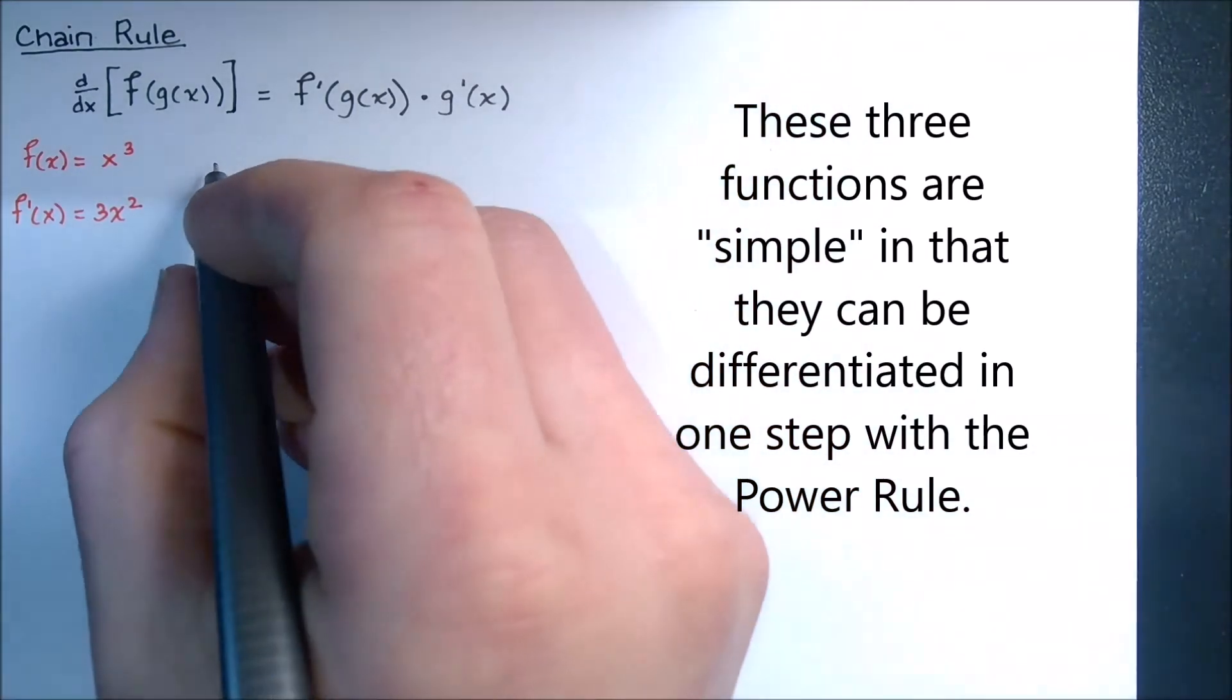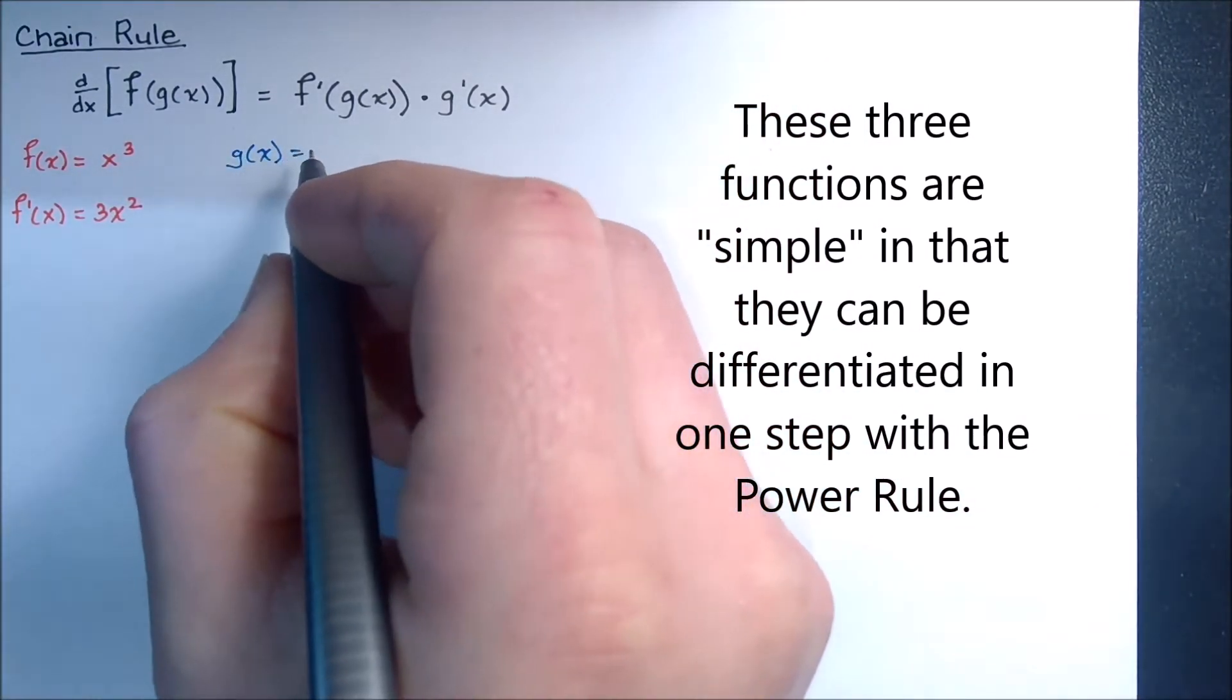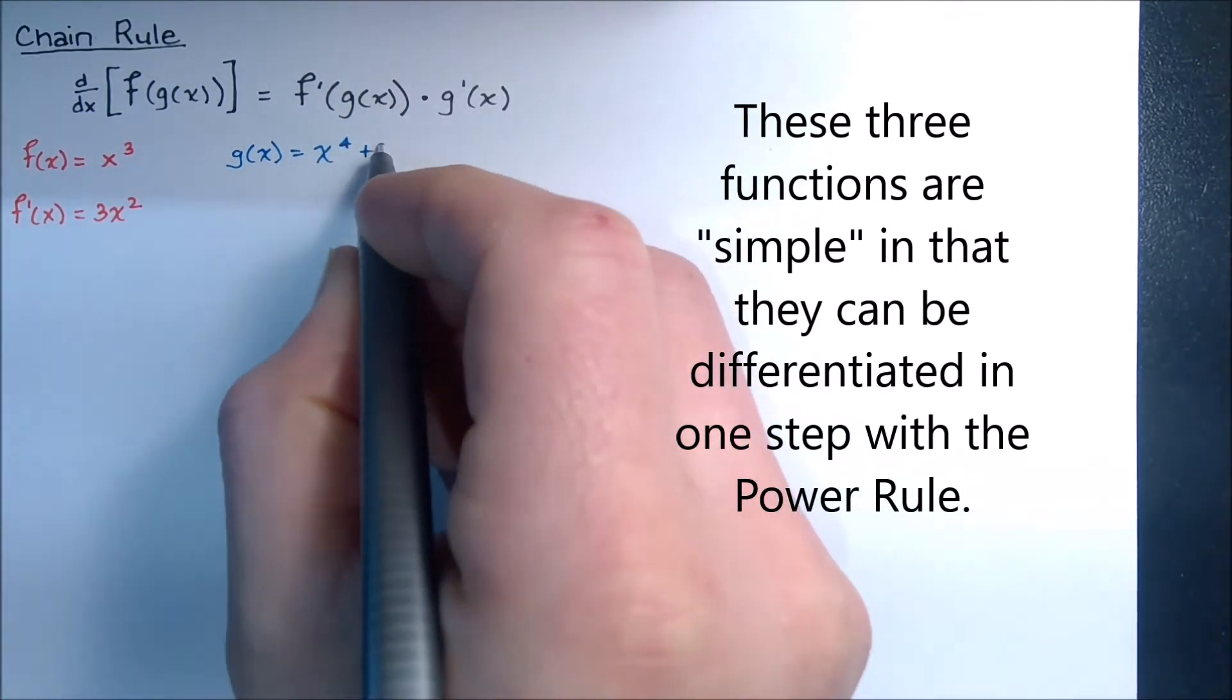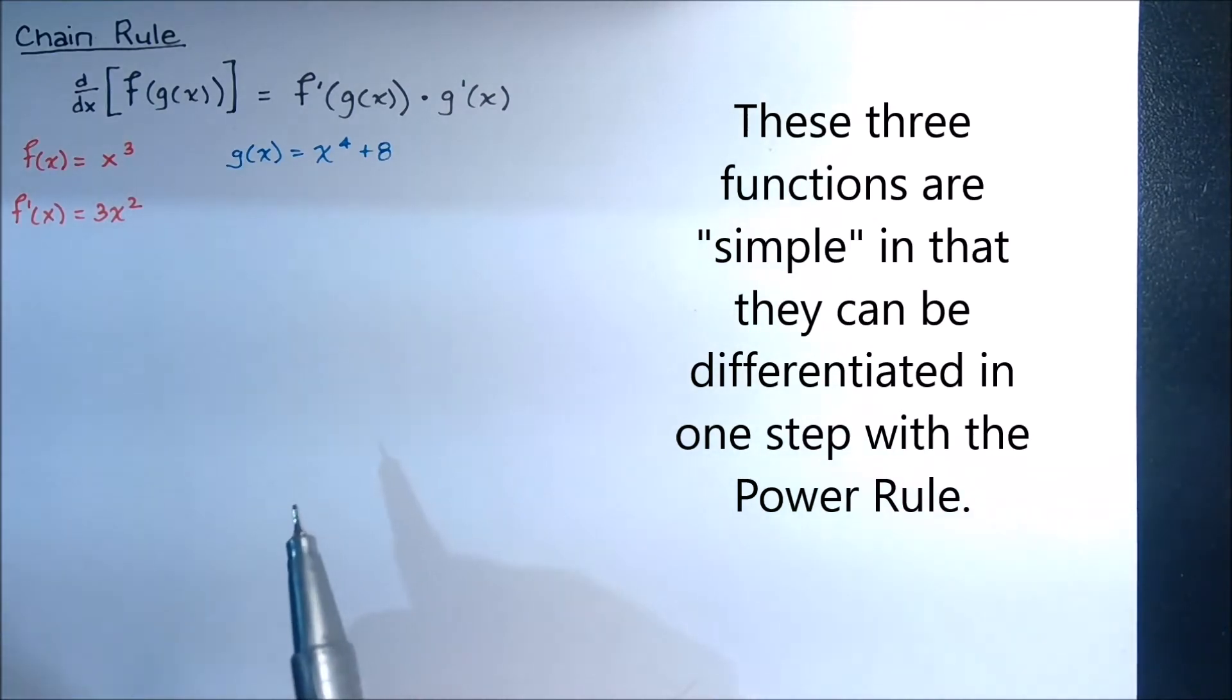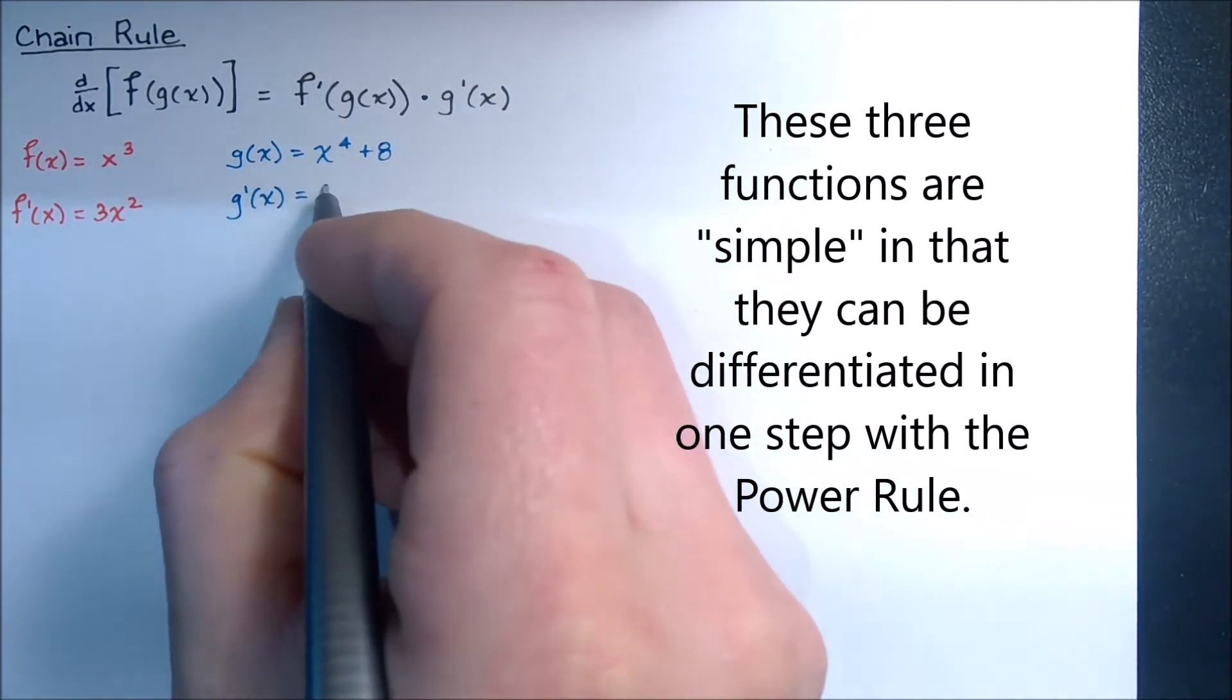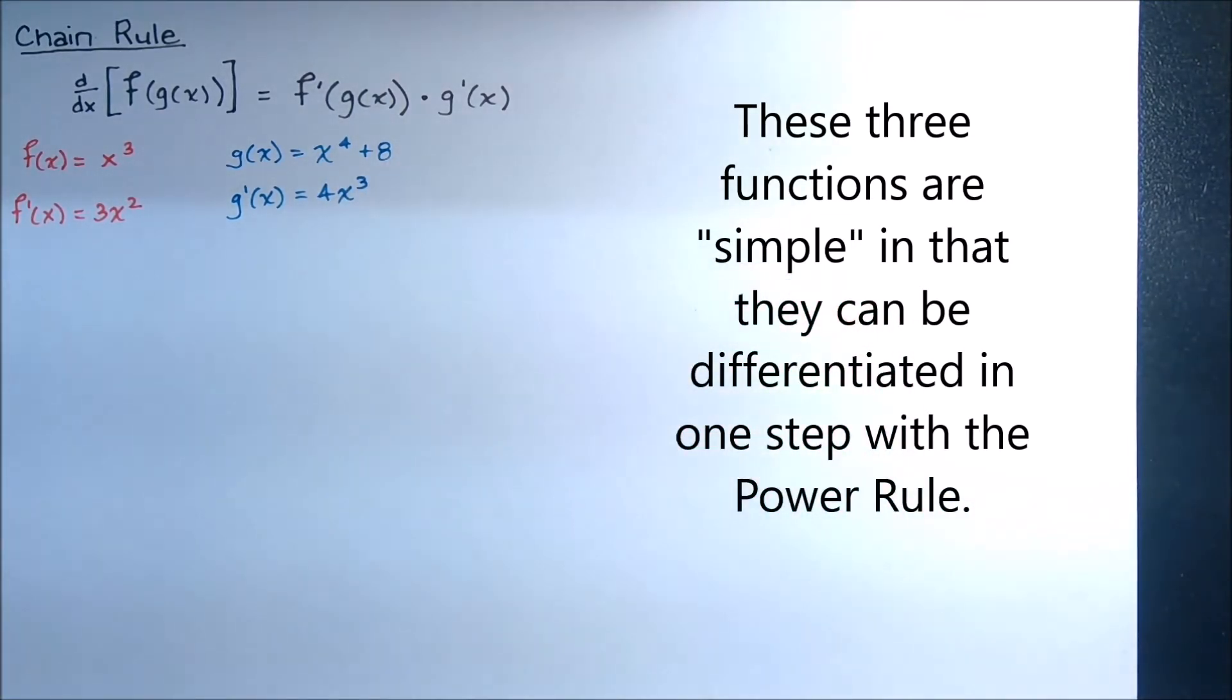Now what if I had another function that looked like this? So let's just call it g of x and g of x was x to the 4th plus 8. Well, we could apply the power rule to that as well and say that g prime of x is 4x cubed. So we'll just leave it like that, 4x cubed.